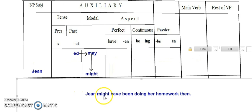We have here have. Have here belongs to the perfect tense. It's not the main verb. If I look here for the main verb: Jean might not have been doing her homework then. What's the main verb? The main verb is do, because if you take the subject Jean, do her homework, this is the main verb.